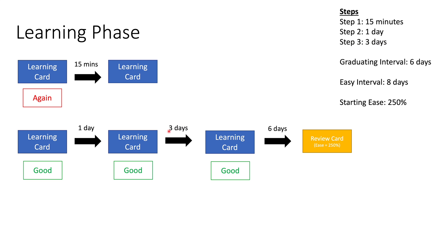Three more days pass and we see the card again. It's still a learning card, you know the answer, and you hit Good one more time. This time when you hit Good, there are no more steps in the learning phase. Since we've only set three steps, there's no more step left, so the card will graduate. Once it graduates, it becomes a review card.